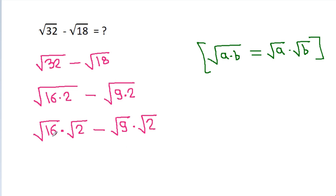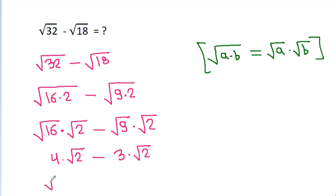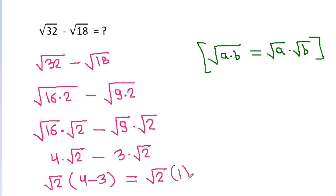And a square root of 16 is 4 times a square root of 2, minus a square root of 9 which is 3 times a square root of 2. And we can take a square root of 2 common, and it is 4 minus 3 times a square root of 2, which equals 1 times a square root of 2. So it is a square root of 2.